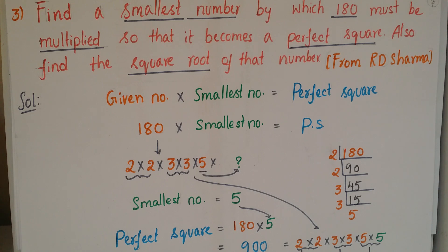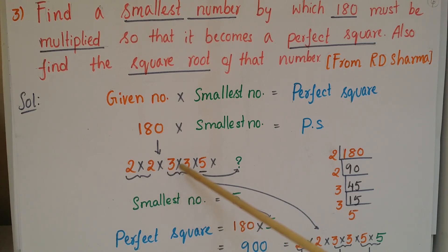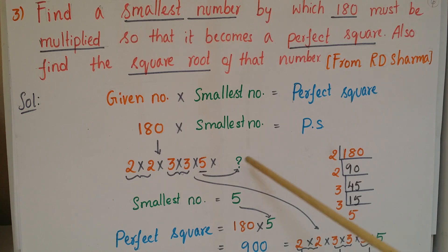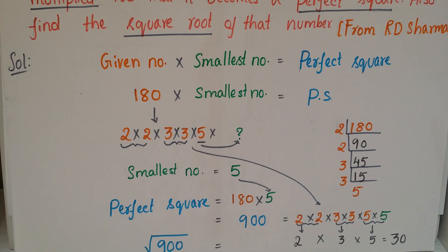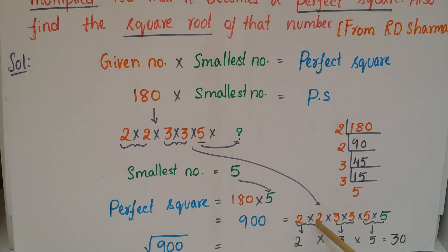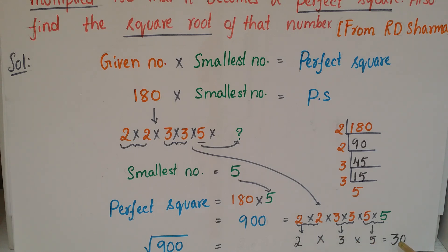Now we have to find the square root of 900. We already know 180 = 2 × 2 × 3 × 3 × 5, and the smallest number is 5, so 900 = 2 × 2 × 3 × 3 × 5 × 5. For each pair, we write one prime factor: from the pair of 2s write 2, from the pair of 3s write 3, from the pair of 5s write 5. Multiply all: 2 × 3 × 5 = 30. So the square root of 900 is 30.